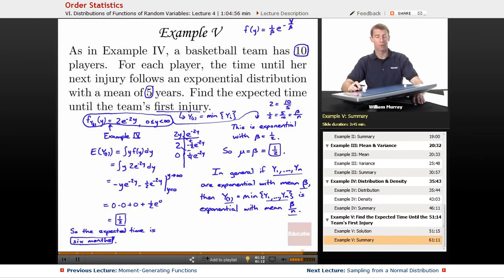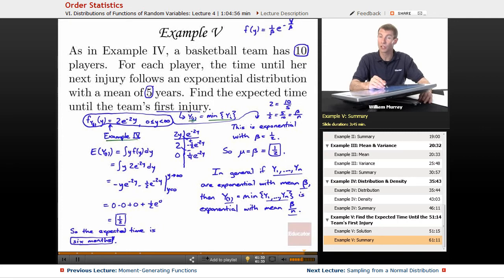So, that wraps up example five. Let me review the steps here. The key step here came from example four, where we identified Y1 as the minimum of these YIs. Remember, YI is the time for each player to get injured, which hopefully is long. Y1 is the first player to get injured. So, Y1 is what you're worried about as a coach. You don't want any of your players to get injured. So, you worry about when it will be until your first player gets injured and maybe forces you to change your team strategy. We calculated the minimum, and back in example four, we calculated the density function for the minimum as 2e to the negative 2y.